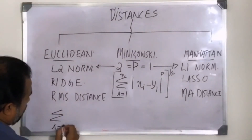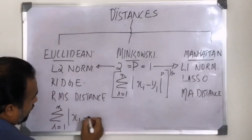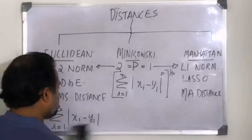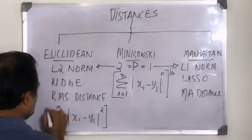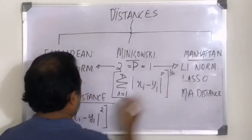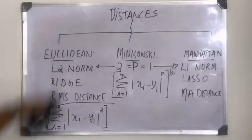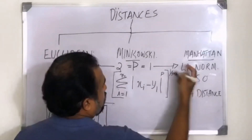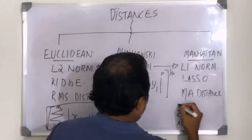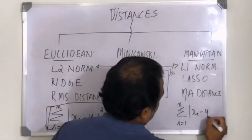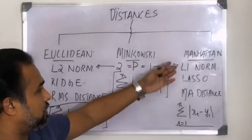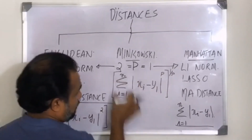The Minkowski formula is: the sum from i=1 to n of |xi − yi| raised to p, all raised to 1/p. When p takes the value 2, this becomes Euclidean. The formula becomes the square root of the sum of (xi − yi) squared. When p equals 1, the formula becomes simply the sum from i=1 to n of |xi − yi|, because 1/p becomes 1/1 = 1, removing the outer exponent.